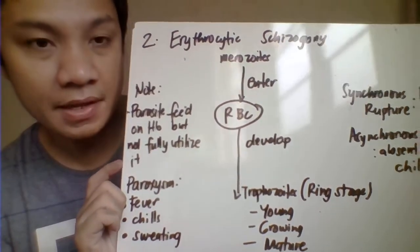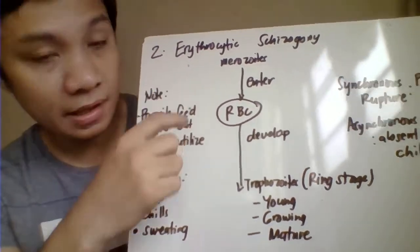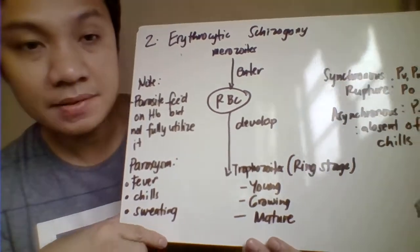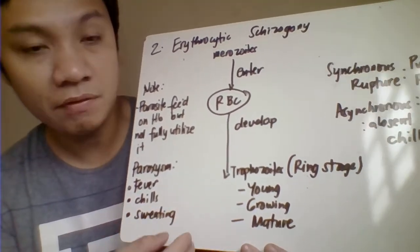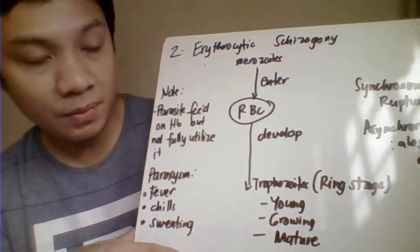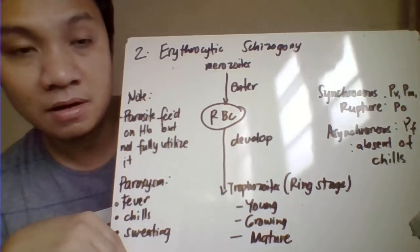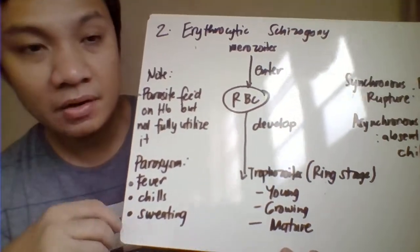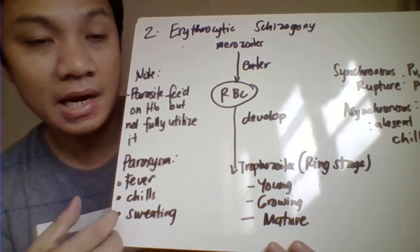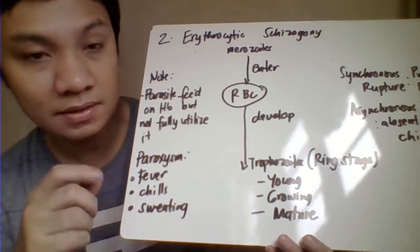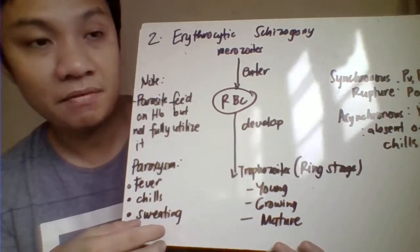As the liver cells rupture and release merozoites, the merozoites enter the red blood cells, beginning erythrocytic schizogony. Inside the red cells, merozoites develop into trophozoites — also called the ring stage — growing from young to mature trophozoites. The parasites feed on hemoglobin but do not fully utilize it. Once inside the red cells, the patient experiences paroxysm — a triad of symptoms: fever, chills, and sweating. The best time to collect blood is during this stage, as the parasites are found in peripheral blood circulation.